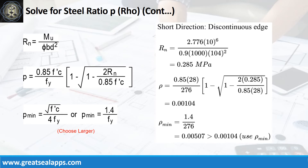Given short direction, discontinuous edge moment equals 2.776 kN per meter. Resistance factor equals 0.9. B equals 1,000 mm and D equals 104 mm. The beam design ratio RN equals 0.285 MPa. Reinforcement ratio rho equals 0.00104. Use rho minimum of 0.00507.